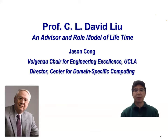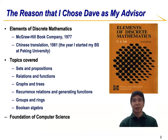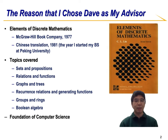I've been a faculty member at UCLA for 31 years. The reason I chose Dave as my PhD advisor was because of this book he wrote back in 1977, entitled Elements of Discrete Mathematics. It was translated into Chinese in 1981, which is also the year I joined Peking University as an undergraduate student. The book covers sets and propositions, relations and functions, graphs and trees, recurrence relations and generating functions, groups and rings, and Boolean algebra — really providing the foundation of modern computer science.